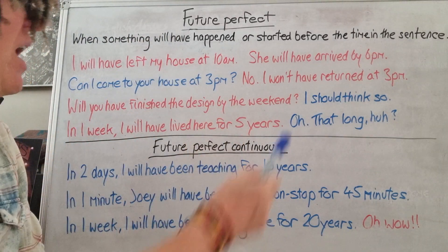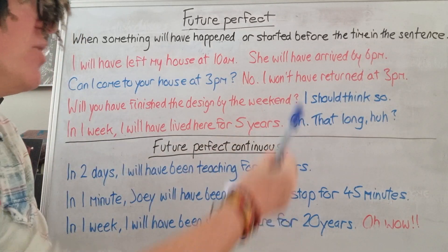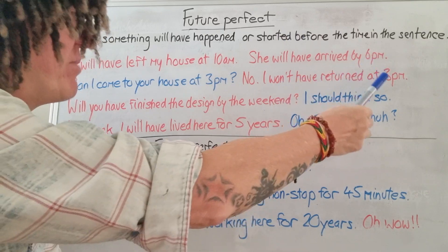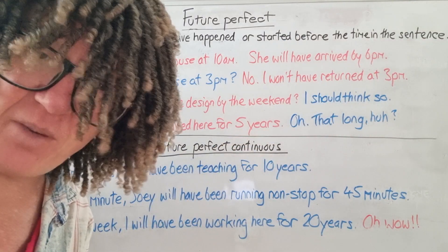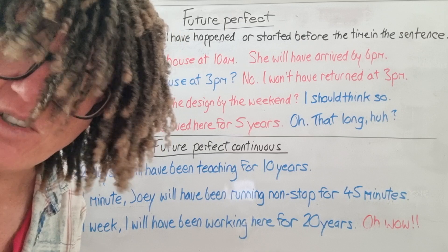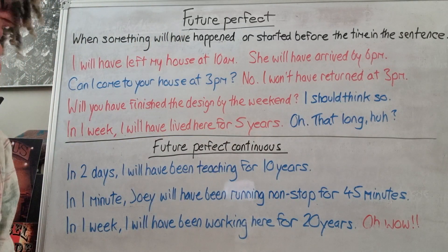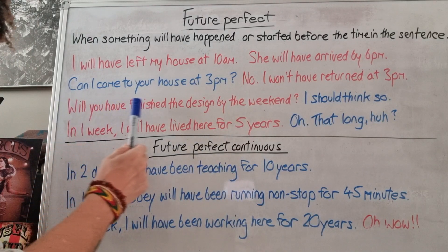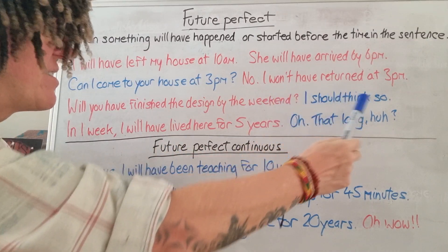'Can I come to your house at 3 p.m.?' 'No, I won't have returned at 3 p.m.' — which means this action will not have happened before this time. If you come to my house before 3 p.m. you're wasting your time; I won't be there at 3 p.m. I'll be there after, but not before.